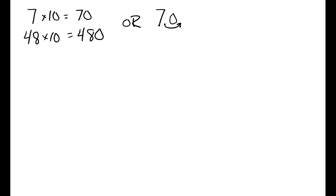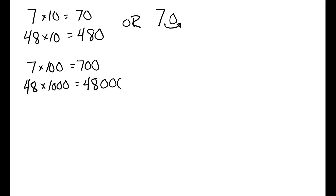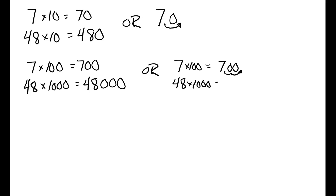Multiplying a number times 100 or 1,000 is just as easy. For example, 7 times 100 equals 700, and 48 times 1,000 is 48,000. Again, I'm just moving my decimal point to the right. In order to multiply a number times 100, I start out with my decimal point here and I move it two places to the right. And in order to multiply a number times 1,000, I move it three places to the right.